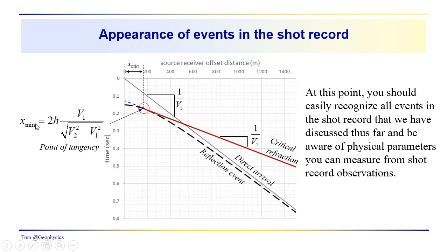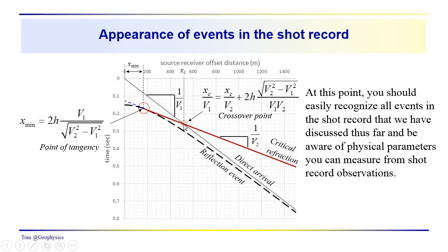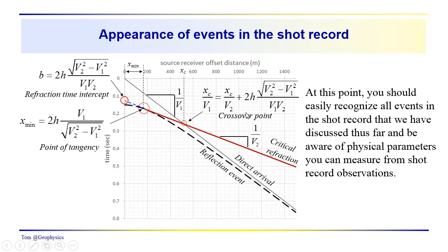We can relate xmin to the thickness of the layer and the velocities V1 and V2. We also have another point often seen in real data — the crossover point. That is the distance at which the direct arrival and the critical refraction arrive at the same time: x_c over V1 equals x_c over V2 plus the intercept term. So we're getting different pieces of information from the data set.